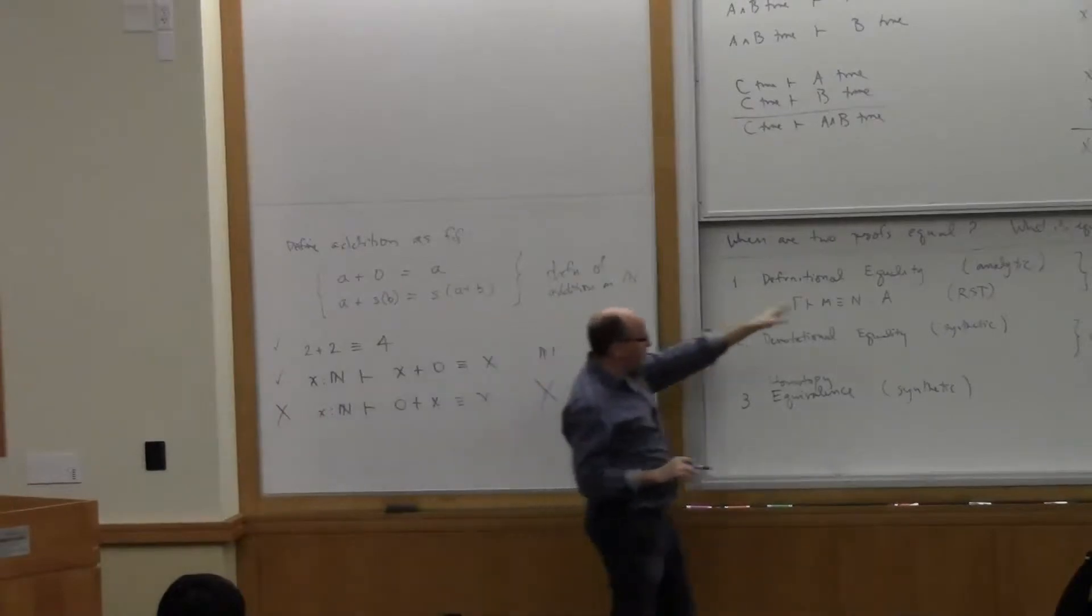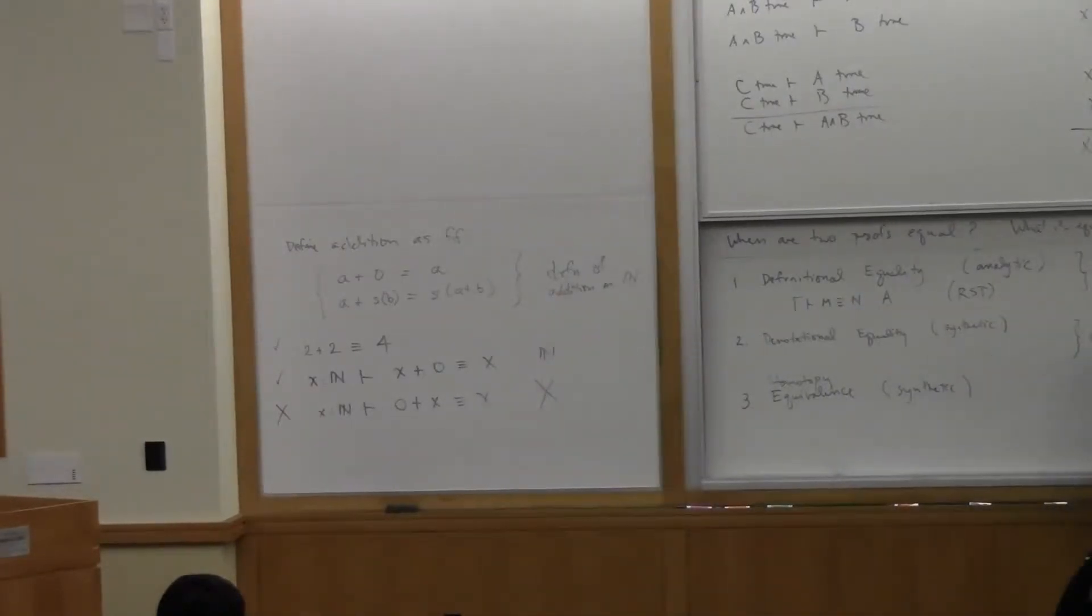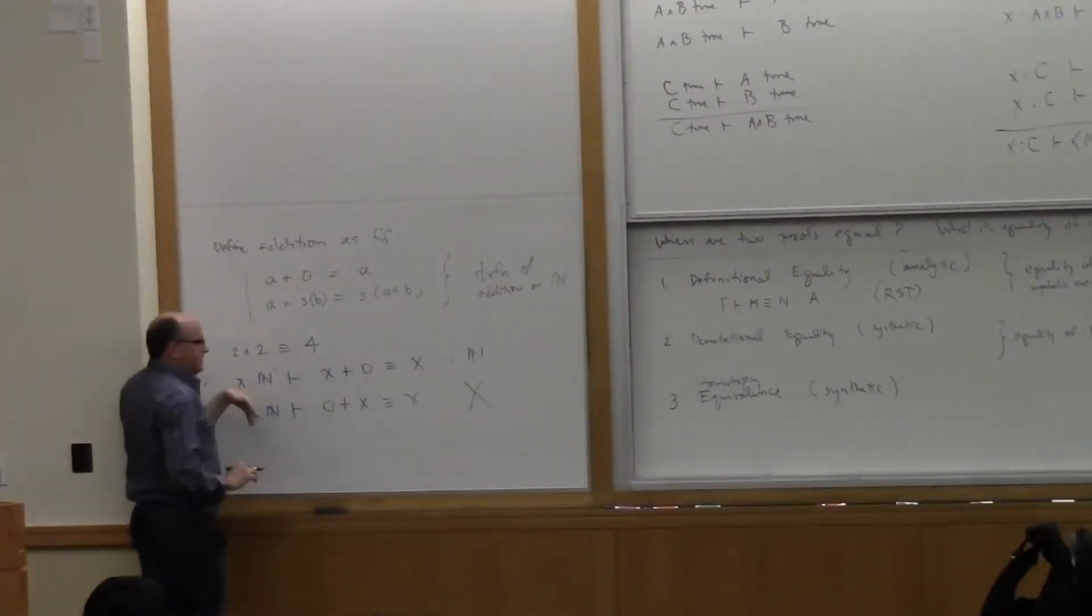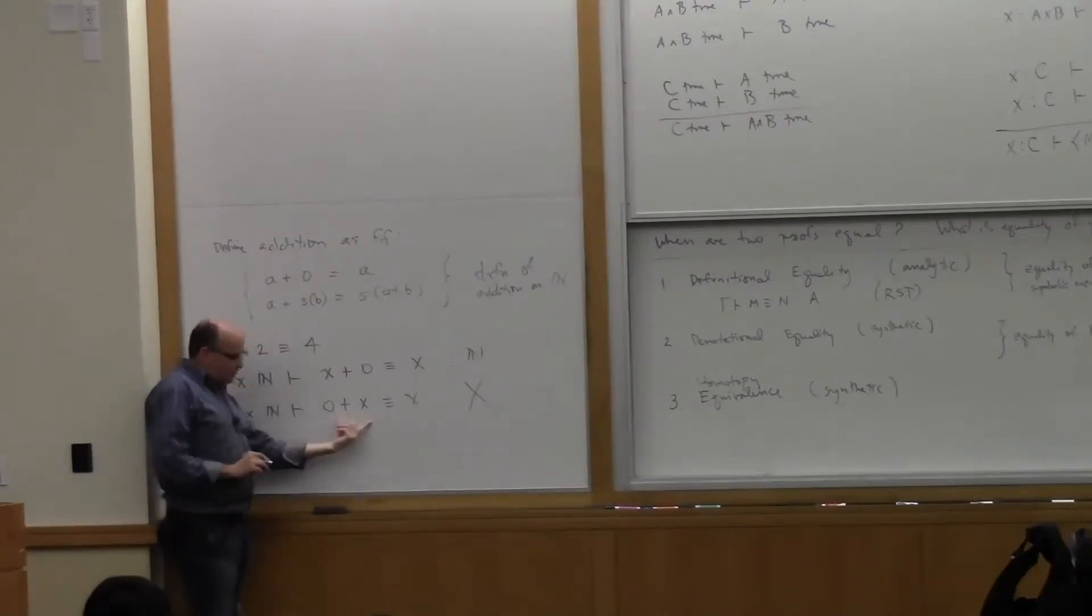It's the least congruence given by the definitions of the operators involved. So, with respect to the first example, I define the operators by these equations, and I take the least congruence. Here, I define addition by these equations, and I take the least congruence. This will not be in that relation.